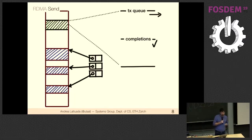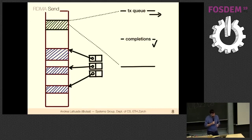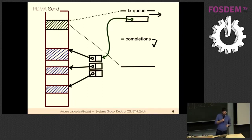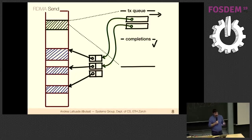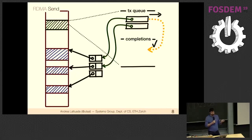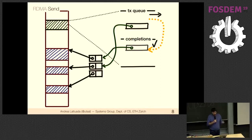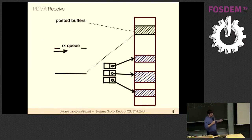Whenever the card completes an operation it enqueues a completion entry to notify us. This is fully asynchronous, which is one of the really cool properties of working with RDMA. To send data, we enqueue an operation request — the NIC picks it up asynchronously, reads directly from our memory, writes it to the remote machine's memory, and once done, enqueues a completion with a pointer to the descriptor.